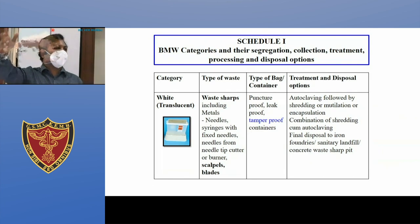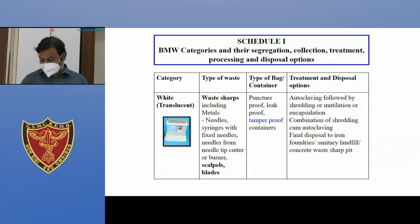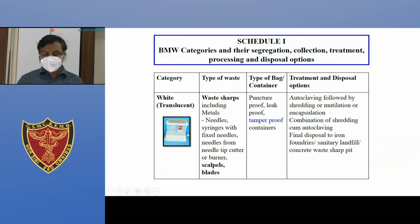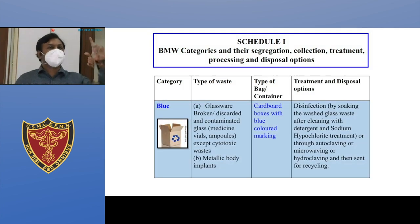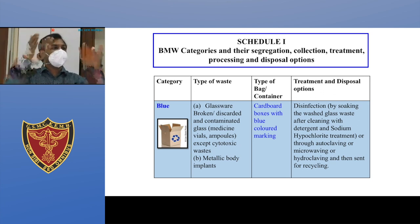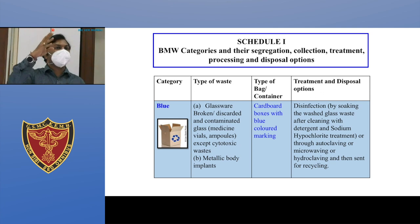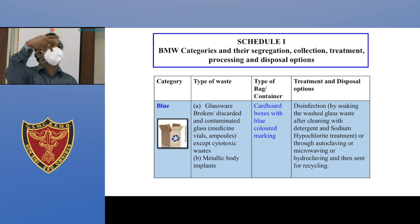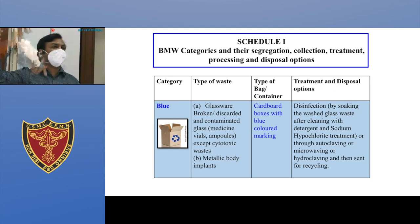The sharps container is important because it is puncture-proof, so no one gets hurt once sharps are inside it. For ampoules and vials — broken glass ampoules — you use a cardboard box with a blue sticker. Do not put these in bags because when you lift the bag, a needle or ampoule inside will tear it open and everything infectious inside will come out and spread infection. Never put sharps in the red or yellow bag.